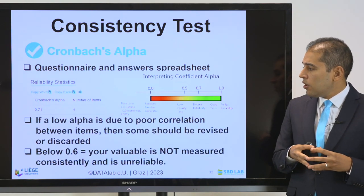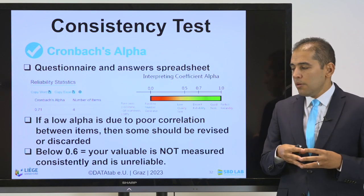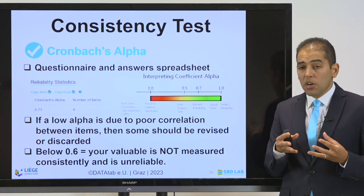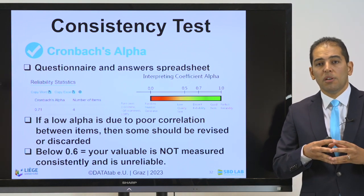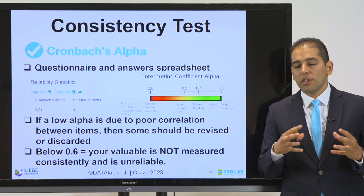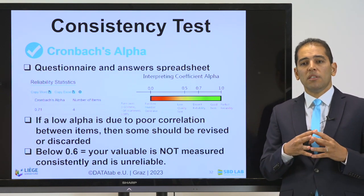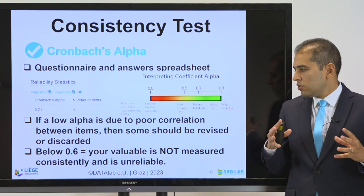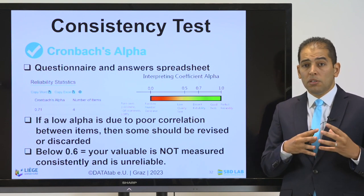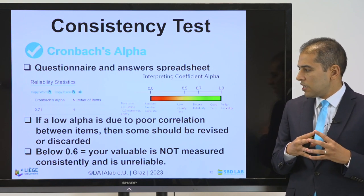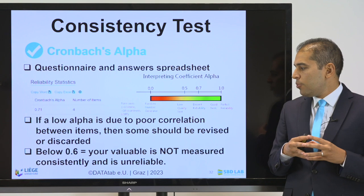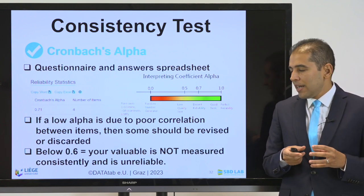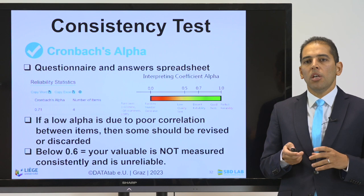If a low alpha is due to poor correlation between items, then some should be revised or discarded. If you discover you have a very low alpha, it means there is no correlation, so you need to discard that test. Below 0.6, your value is not measured consistently and is unreliable.